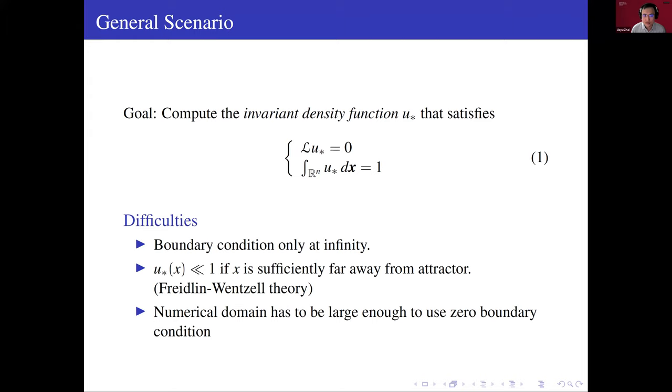The difficulty for solving this problem using traditional numerical methods is it lacks the boundary condition. But we can do it this way. By the Freidlin-Wenzel large deviation principle, the probability for a particle to transit to any point that is far away will be very small. So we can assume zero boundary condition on a very large domain, where this large domain covers all the high-density parts of this distribution.